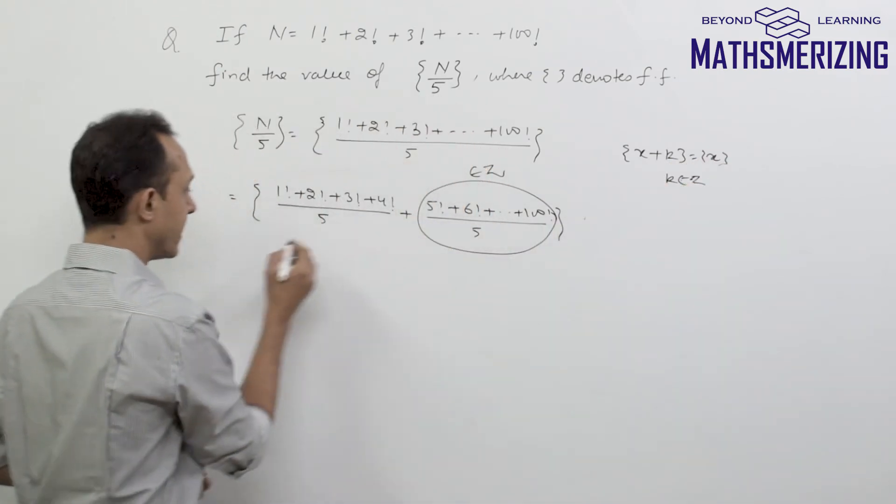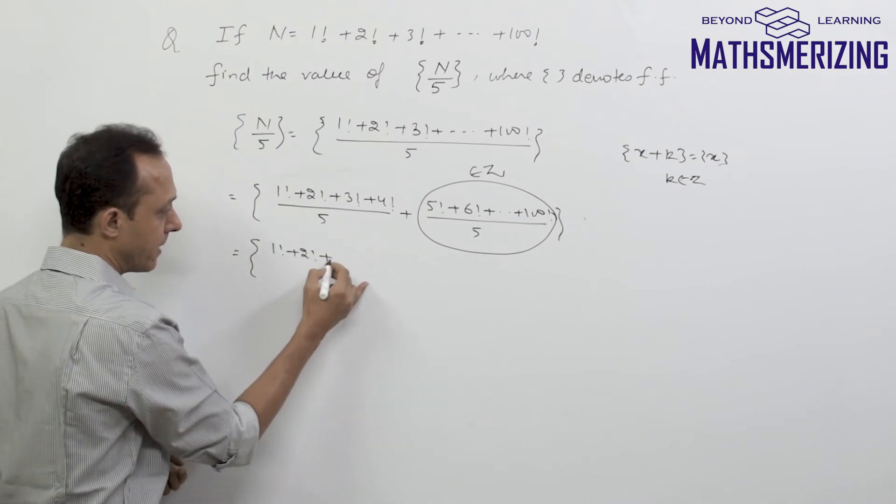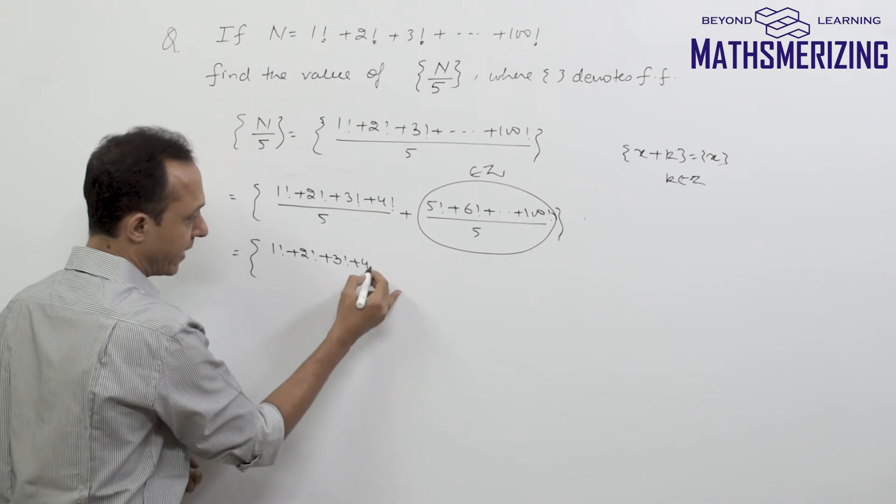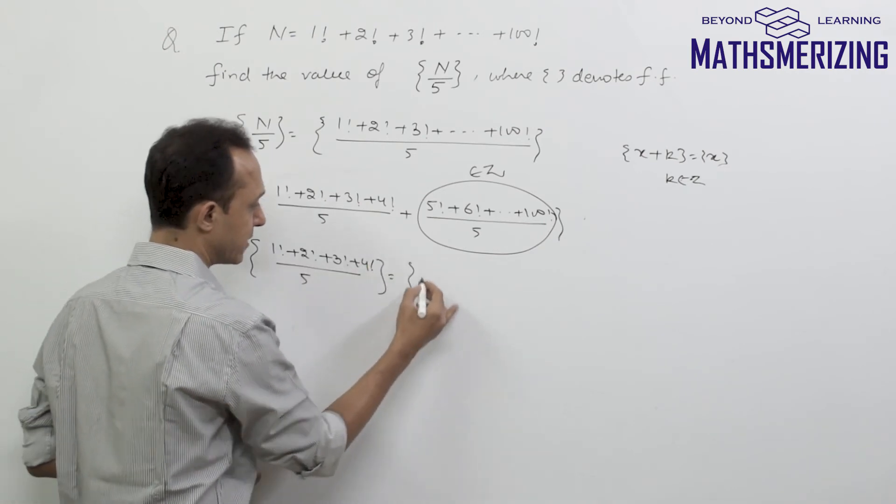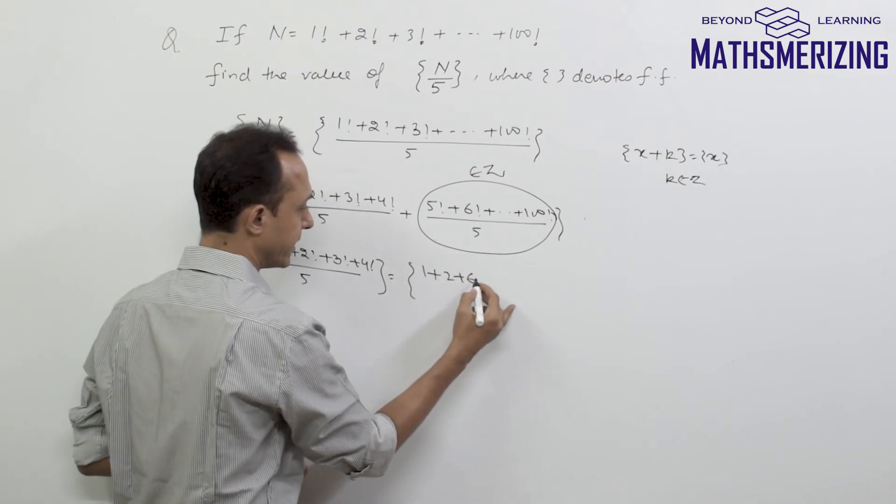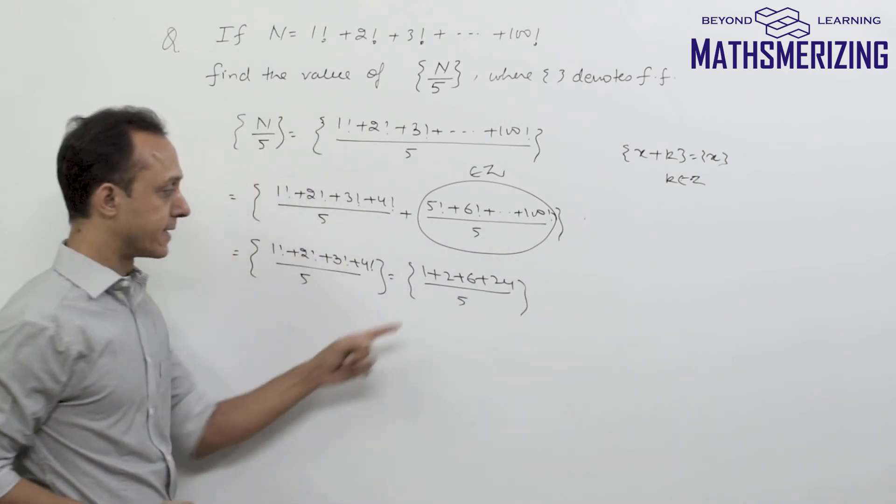So what I'll do is I can simply write it as fractional part of factorial 1 plus factorial 2 plus factorial 3 plus factorial 4 divided by 5, which is 1 plus 2 plus 6 plus 24 divided by 5, and which in this case is 33.